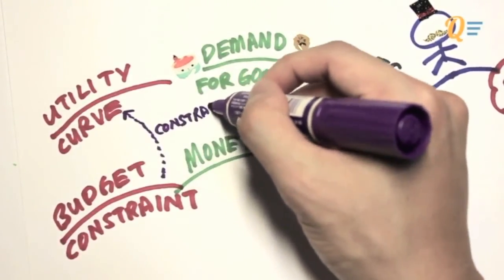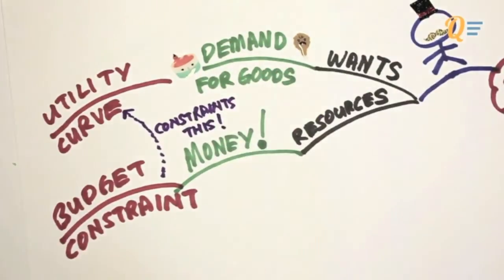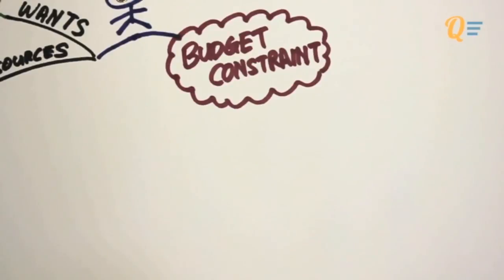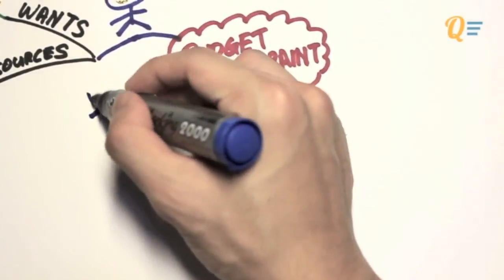As you can see here, the budget constraint actually constrains the utility curve. So today we will be going through the budget constraint and we will be trying to understand it in greater detail.